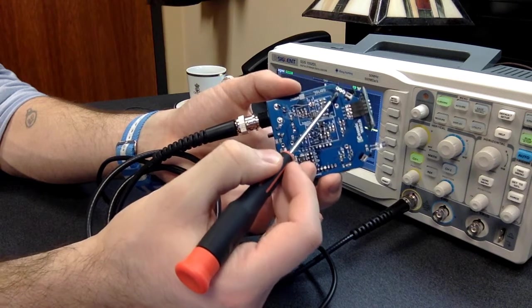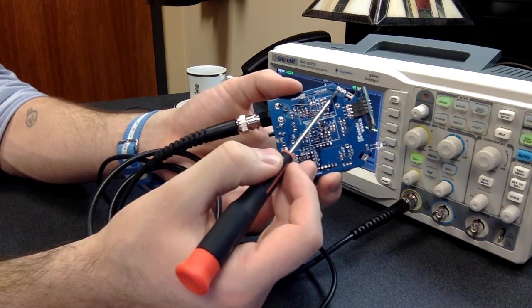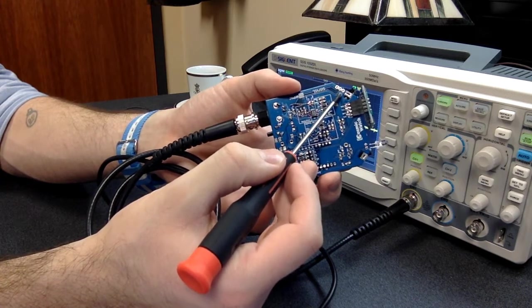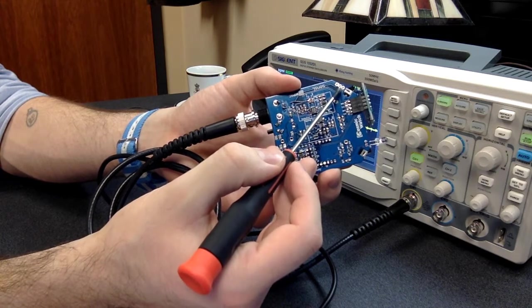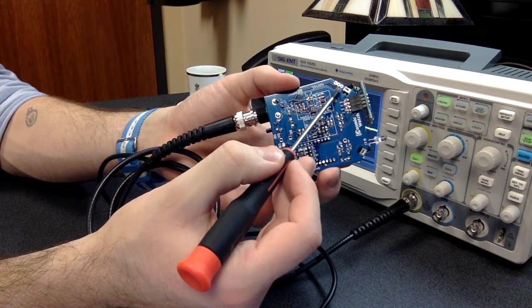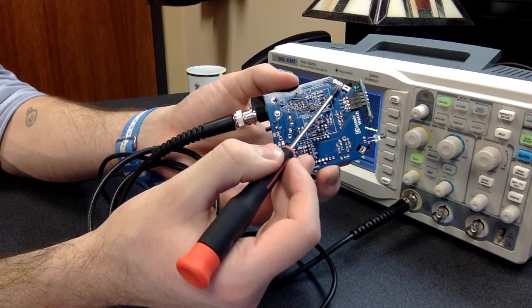Test point two is the amplified signal, so we amplify the signal by about a factor of 20 to 25-ish. And then test point three is the peak detector circuit, so we can look at what the peak detector is doing. And this is what the Arduino is actually measuring, so the Arduino measures on test point three.